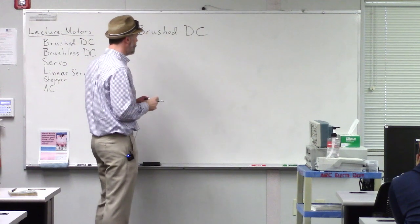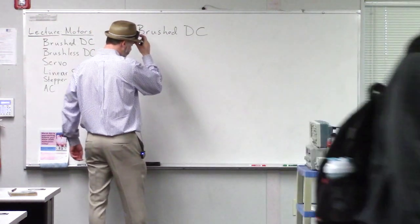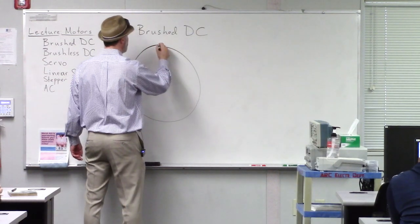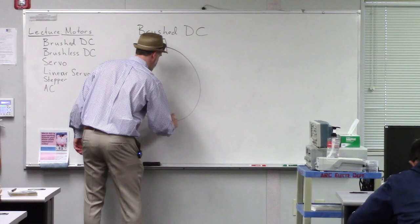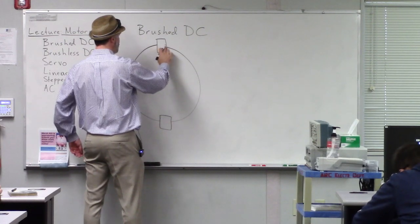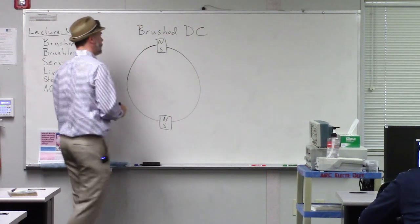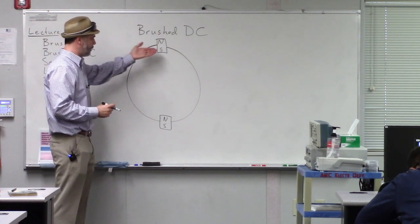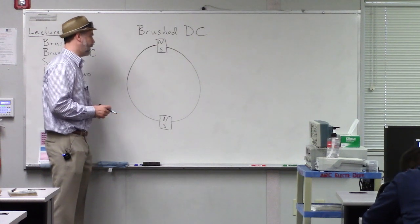A brushed DC motor is essentially the simplest type of motor you can have. You've got a metal enclosure, and around the outside of that metal enclosure you have permanent magnets. These permanent magnets are just what they sound like — they're permanently activated and always have the same polarity, so maybe you have north and south like that. In a real motor you'd have more magnets around the outside, but for simplicity we'll show just two.